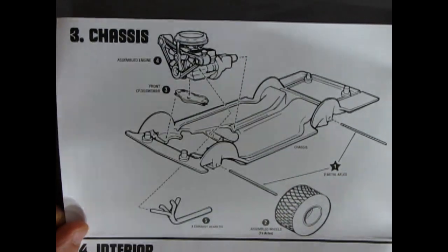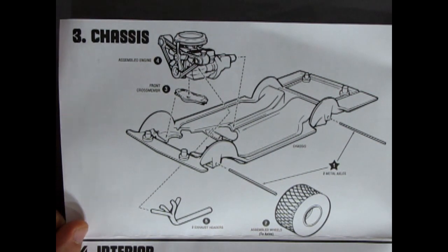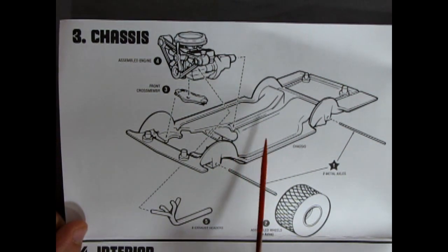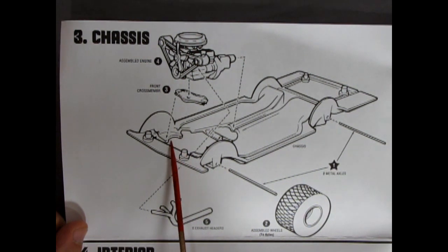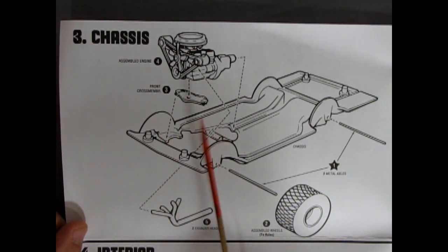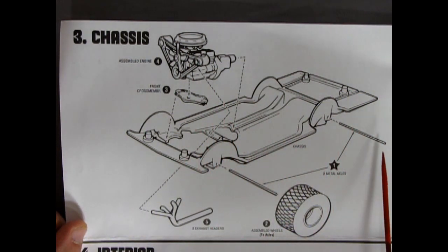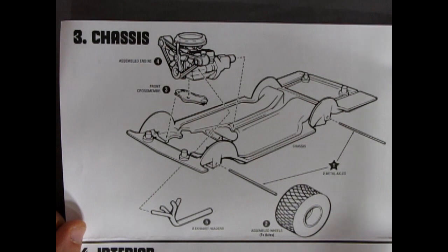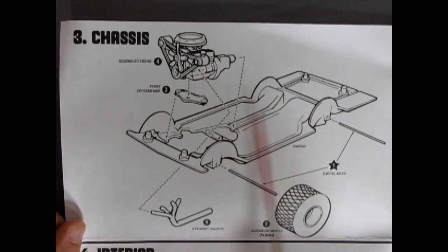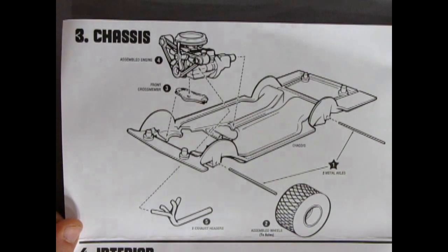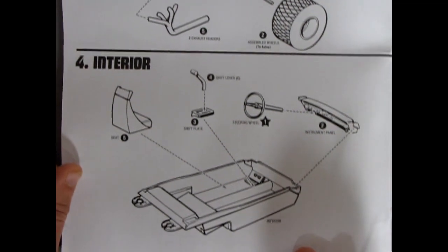Now, let's take a look at step number 3. Which is the chassis. And, again, this Buick is like our Oldsmobile. Although, you do glue a cross member in between your front suspension. Your front A-arms, lower A-arms. And, drop the engine in onto the flat panel chassis. You have your two metal axles. And, your assembled wheels going on there. And, your exhaust hitters are going to pop up underneath here. Once you've got it all together.